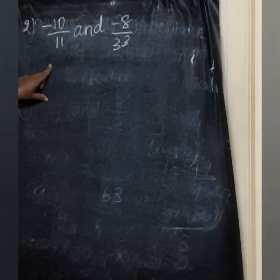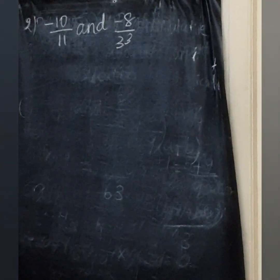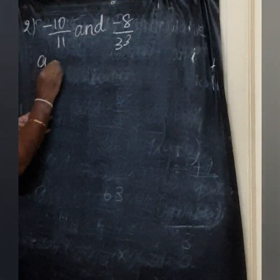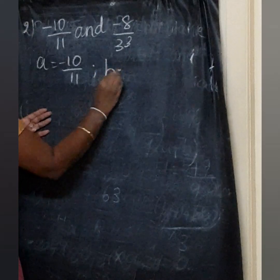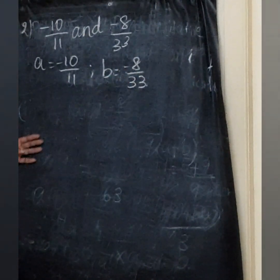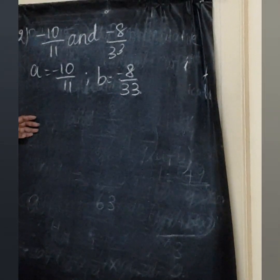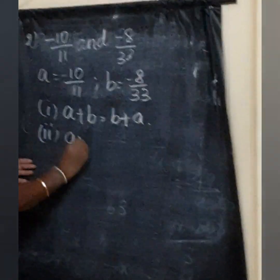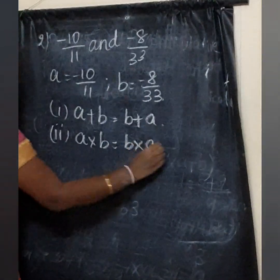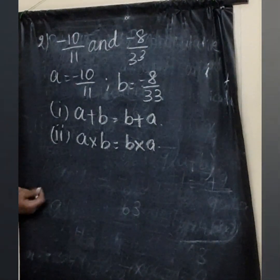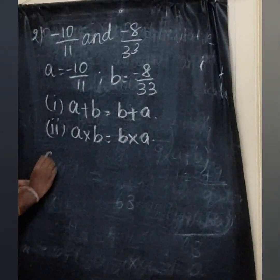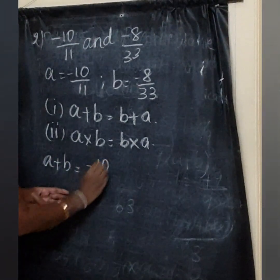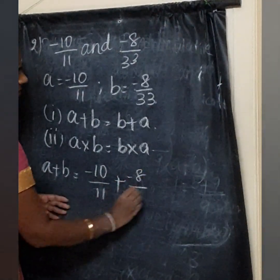Second sum: verify the commutative property for addition and multiplication for rational numbers minus 10 by 11 and minus 8 by 33. Let A equal minus 10 by 11 and B equal minus 8 by 33. Commutative property: A plus B equals B plus A, and A into B equals B into A. First find A plus B: minus 10 by 11 plus minus 8 by 33.